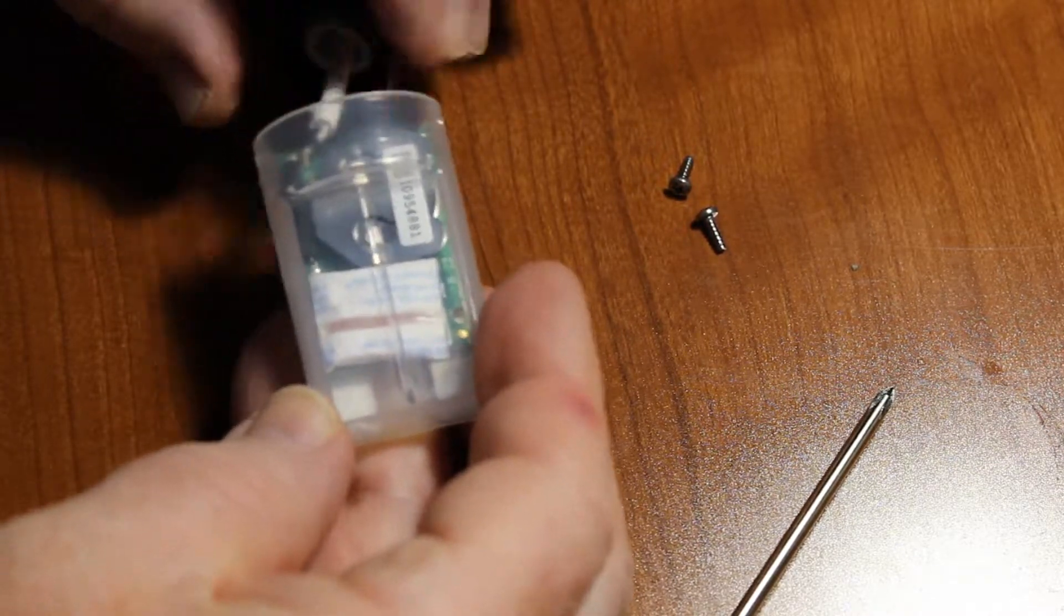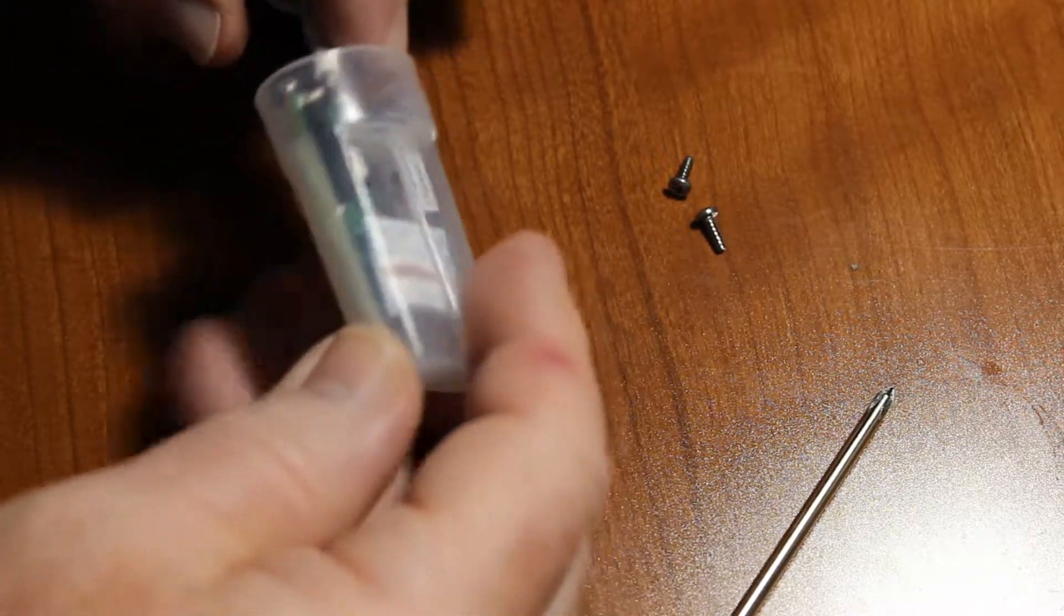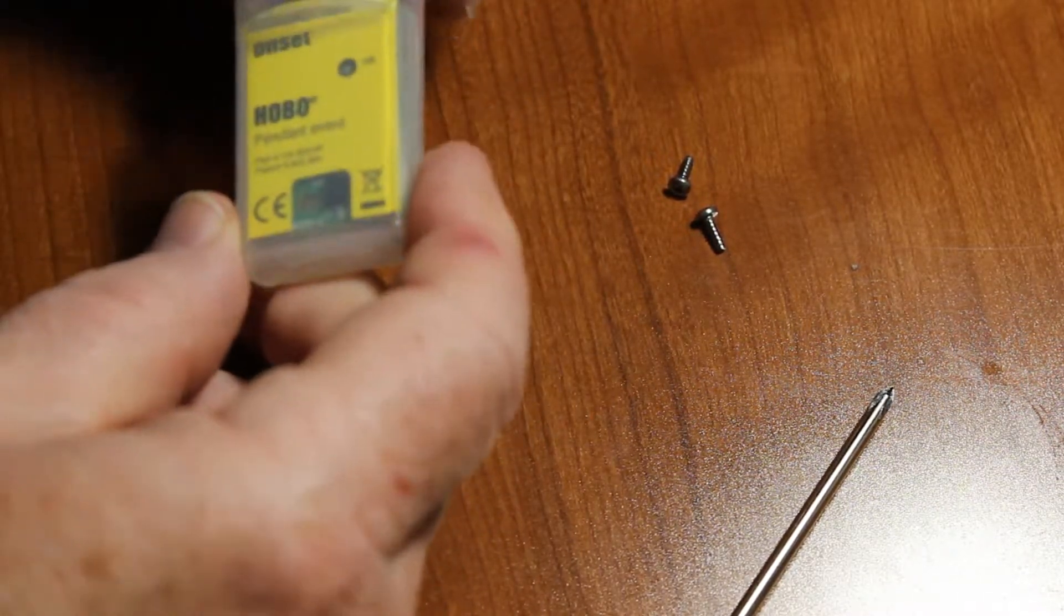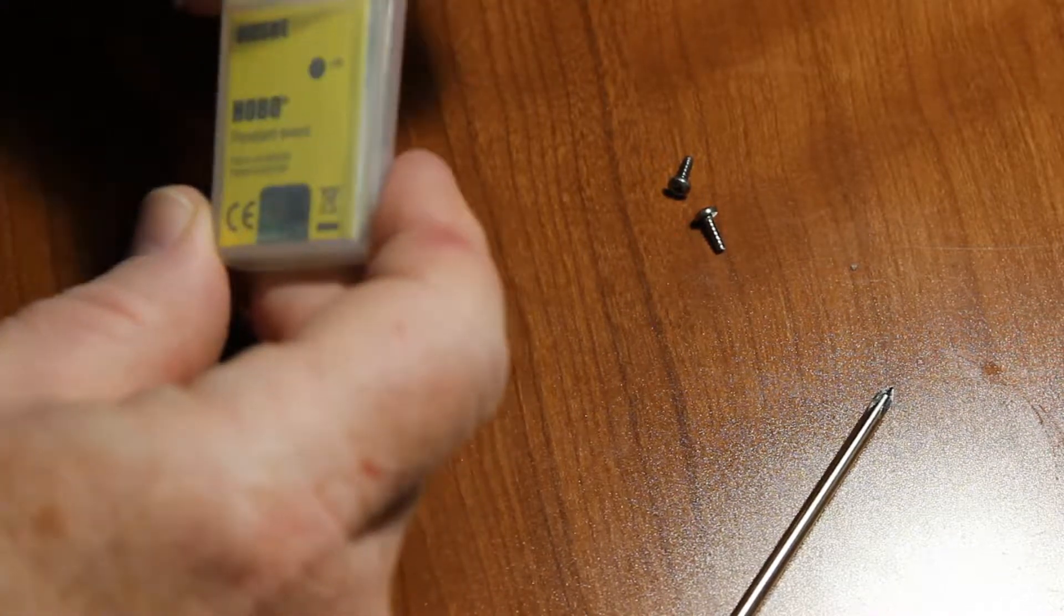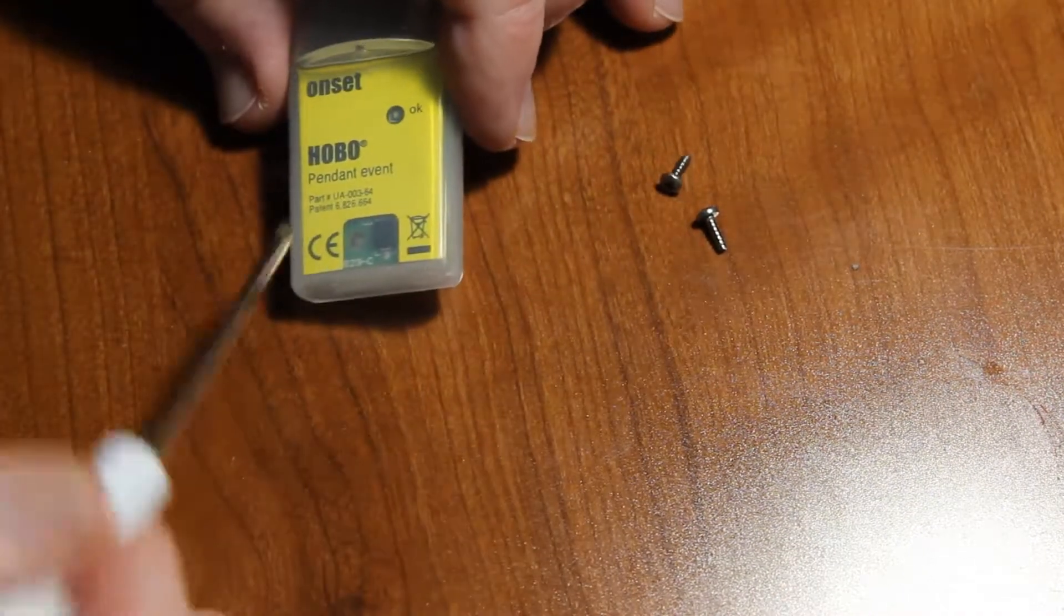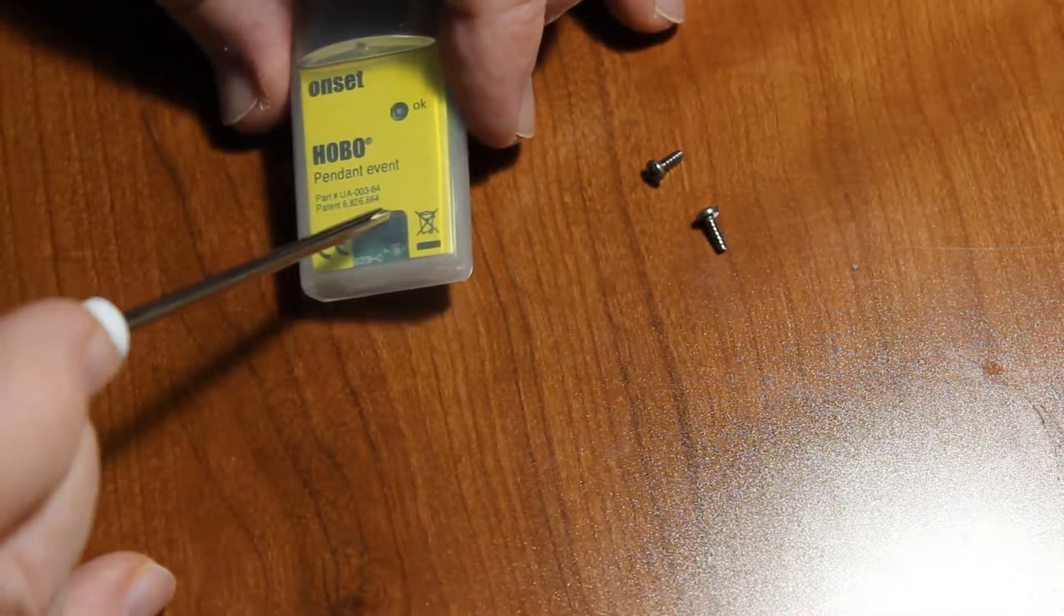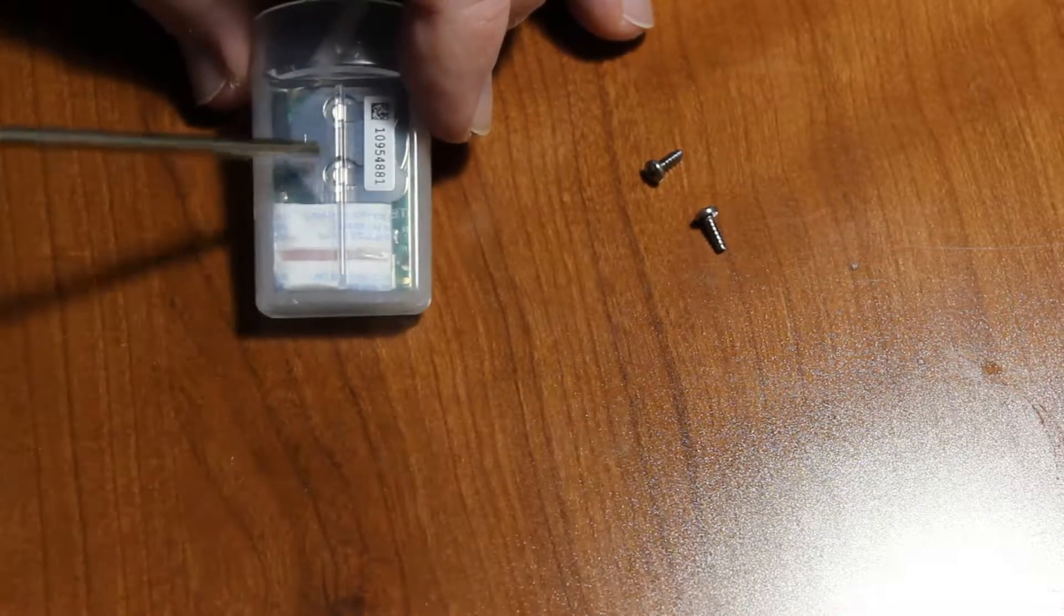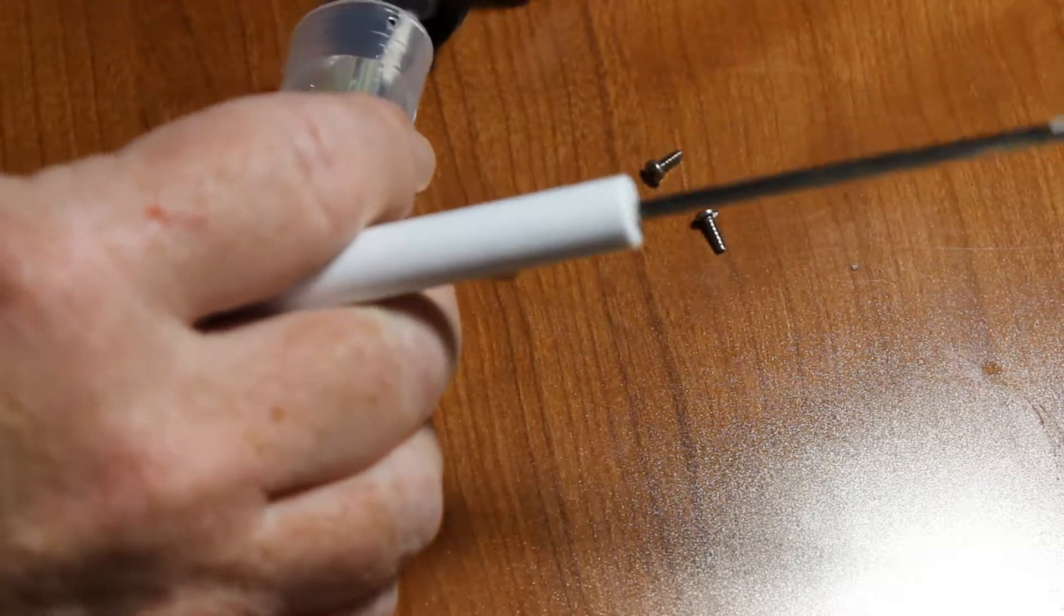And now we can see we have it back together the correct way. Here is our infrared LEDs that are exposed. There's my desiccant pack. There's my battery. There's my spline, so I have it in the right orientation.